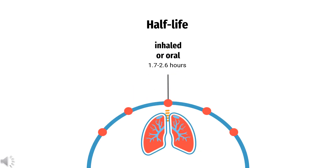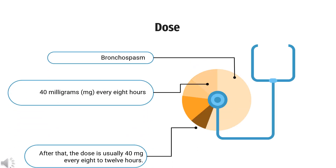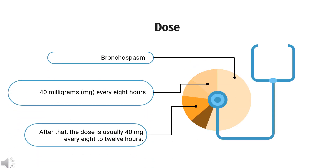Half-life: 1.7 to 2.6 hours. Dose — Adults (oral): In the first 24 hours after the doctor stops your intravenous Ritadrine, your dose may be as high as 40 mg every 8 hours. After that, the dose is usually 40 mg every 8 to 12 hours.